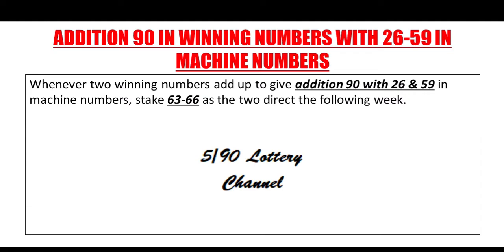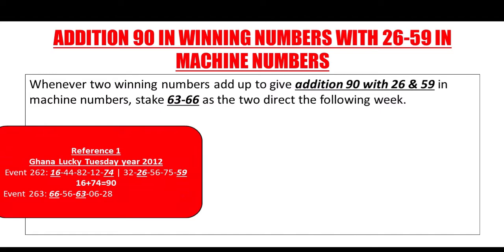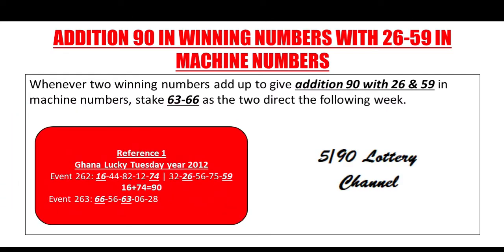Let's proceed to look at some examples — where this key sets and the numbers it played. In the Lucky Tuesday game, year 2012, Event 262, you can see 16 and 74 in winning numbers give Addition 90, and there's 26 and 59 in machine numbers. The following week, 66 and 63 dropped live as two sure.